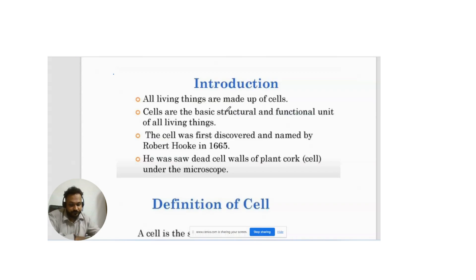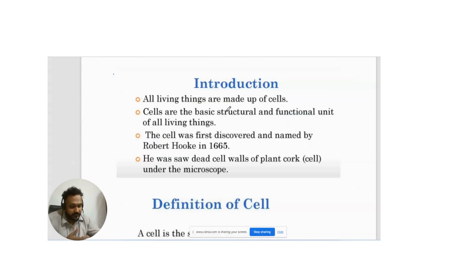There are three things which are very common in almost all types of cells: the cell membrane, cytoplasm — which is a jelly-like fluid inside the cell — and genetic material, which in human cells is DNA, deoxyribonucleic acid. There are two broad categories of cells: eukaryotic cells, which are more advanced and found in plants and animals,